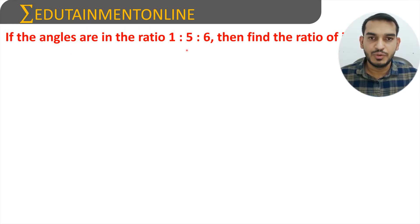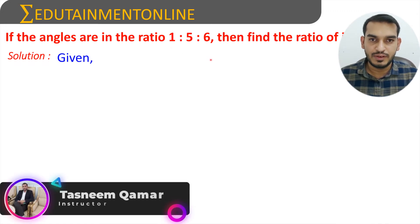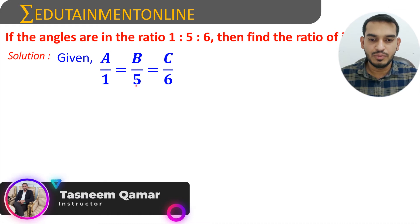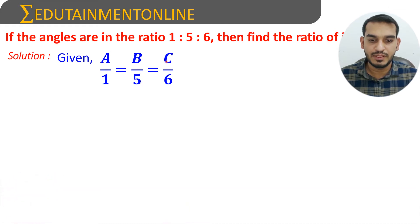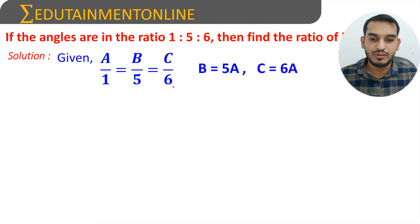If the angles of a triangle are in the ratio 1:5:6, find the ratio of its sides. Given the ratio 1:5:6, we can write a/1 = b/5 = c/6. Converting b and c in terms of a, we get b = 5a and c = 6a.